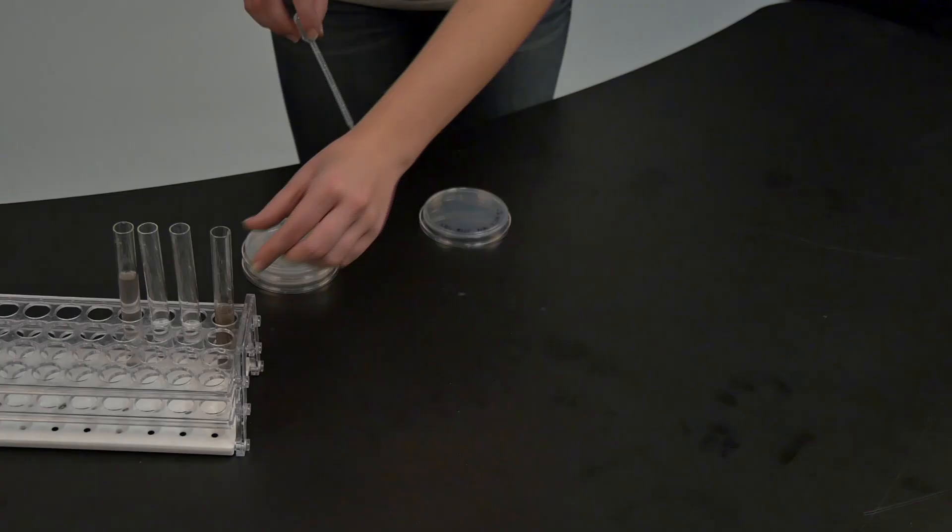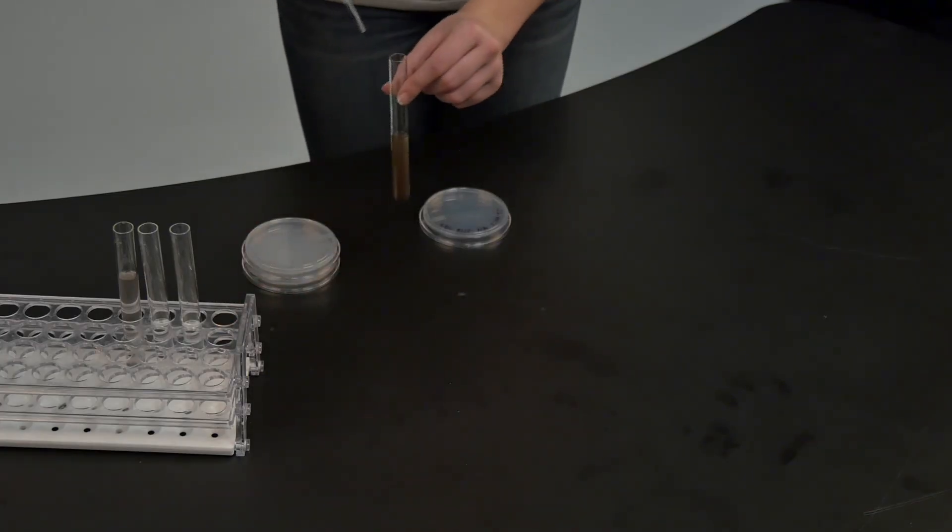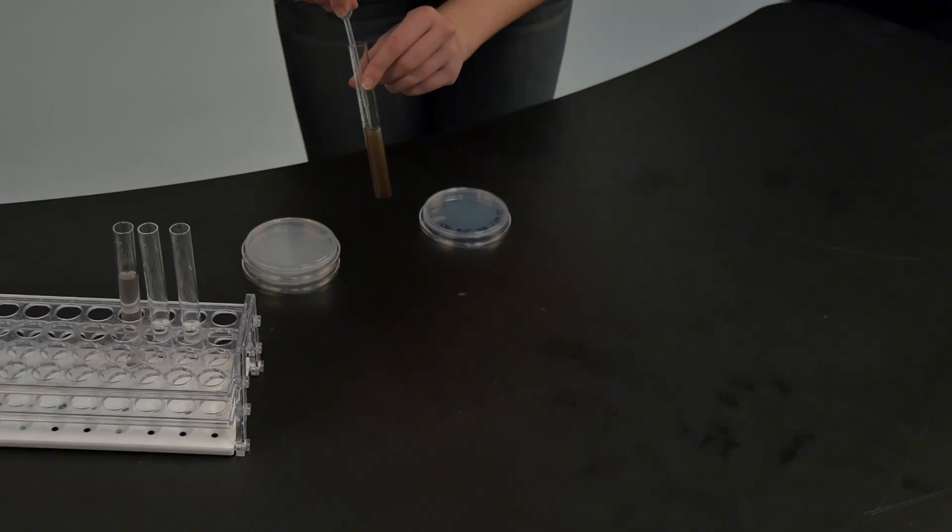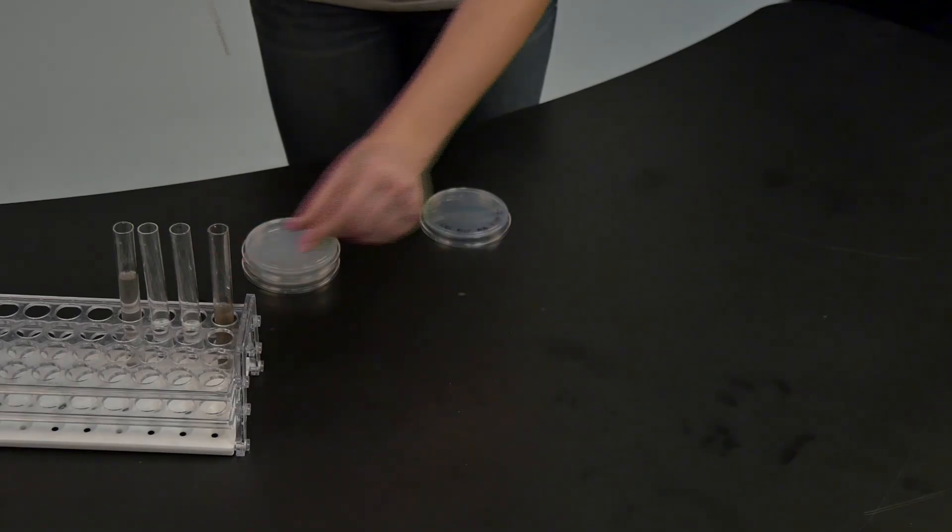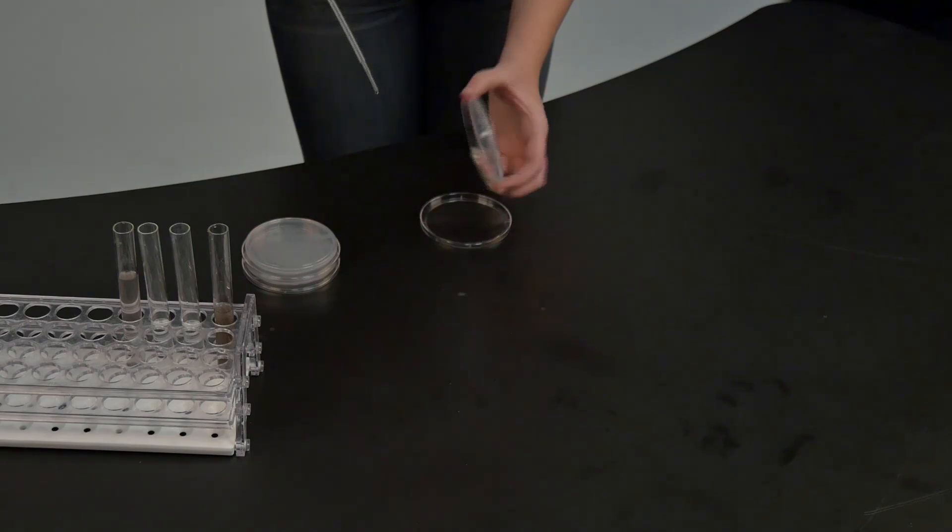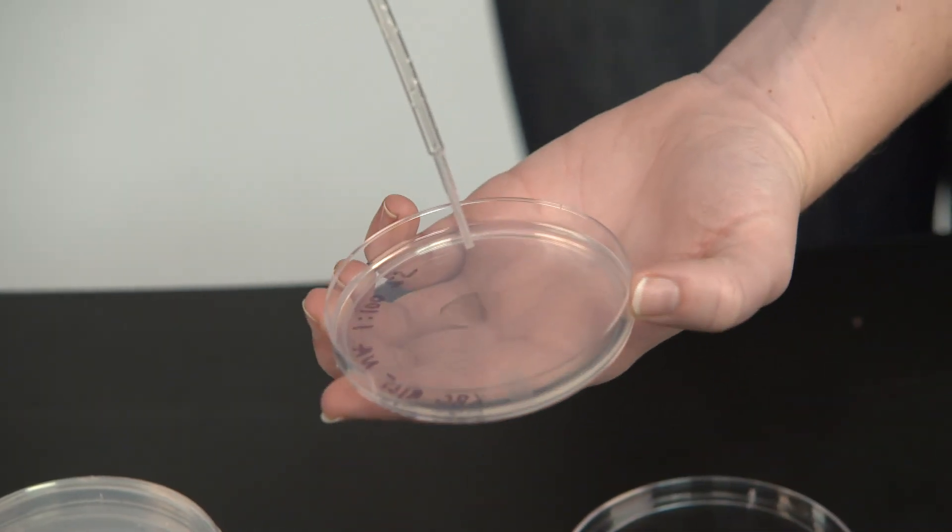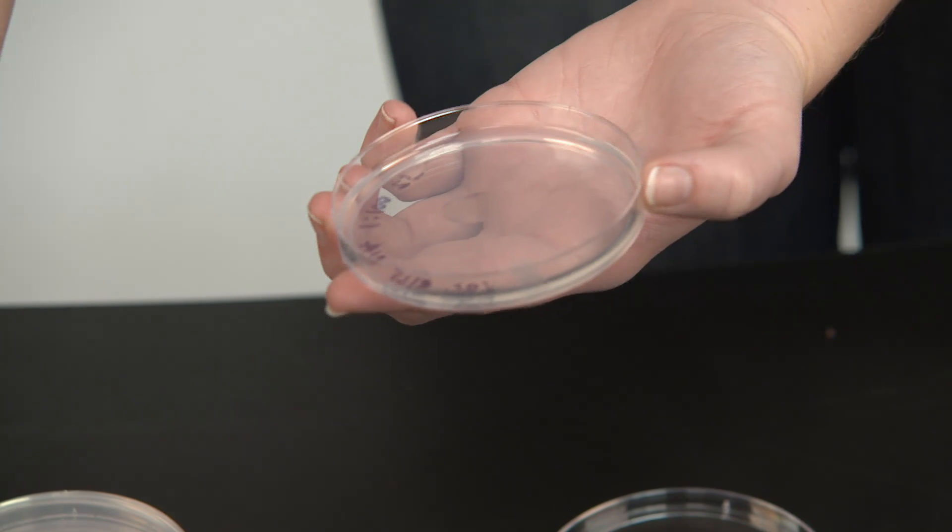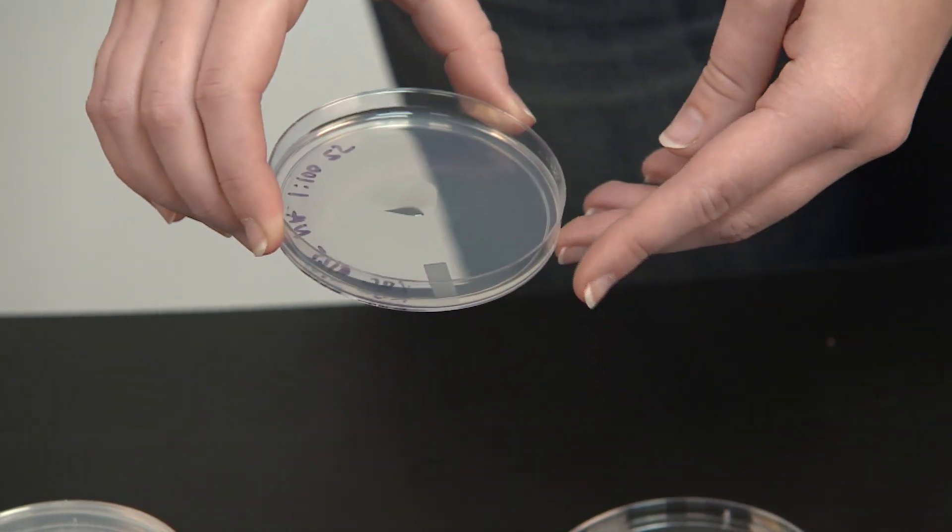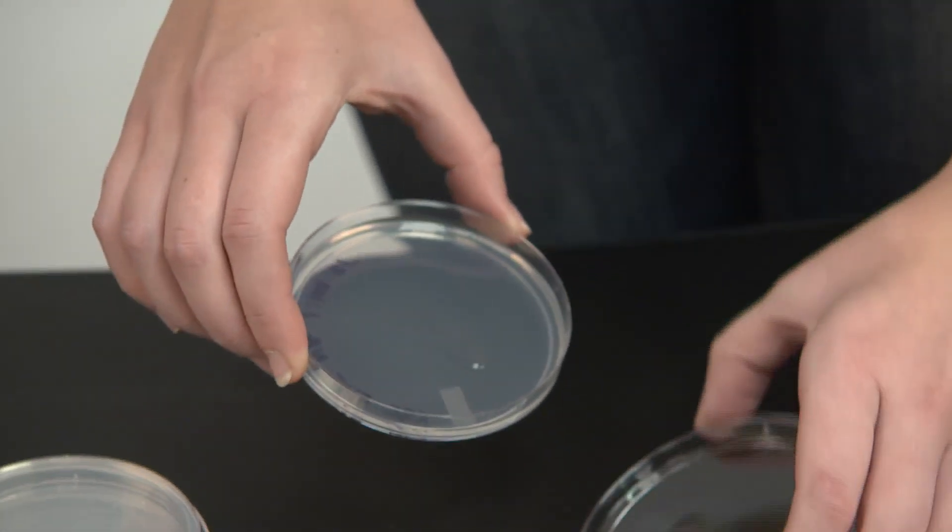Transfer 0.1 milliliters of solution from each of your containers. You'll notice on the plastic transfer pipette that the 0.1 milliliter marking is at the very bottom where the indentation occurs. When you transfer this, you'll want to aliquot it onto the agar surface of your petri plate. Make sure that there are no air bubbles in your plastic transfer pipette.